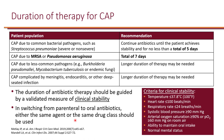However, some agents are only available as IV — for example, ceftriaxone is only IV. In that case, you can find an oral equivalent of that agent as long as it's in the same class. In general, a third-generation cephalosporin can be switched from IV to oral. The same is true with the penicillins and beta-lactams in general.